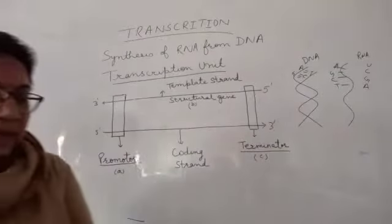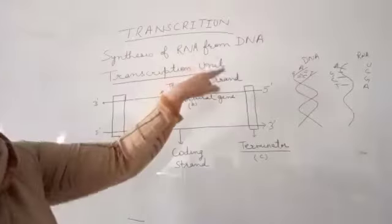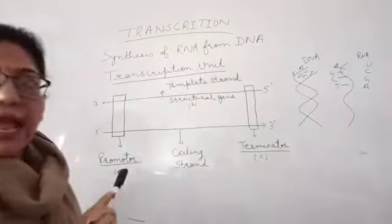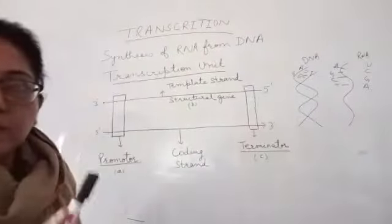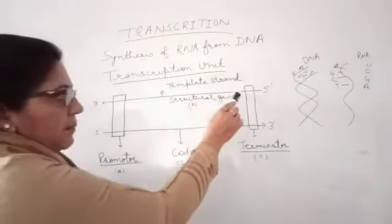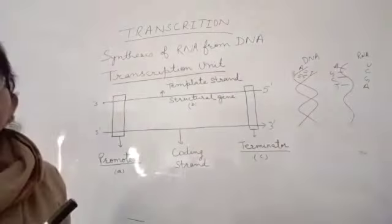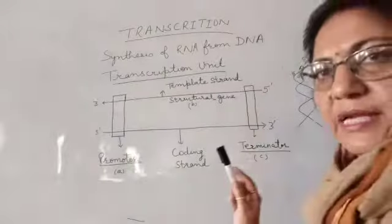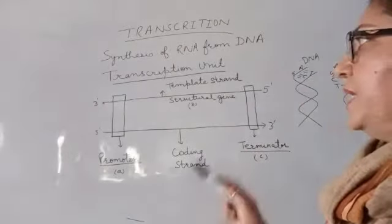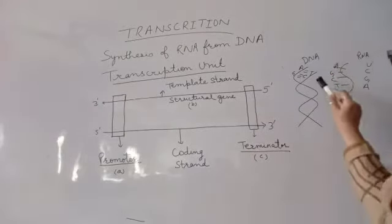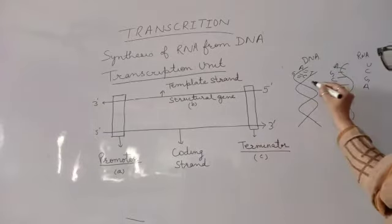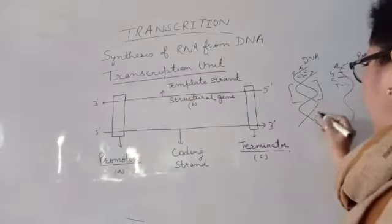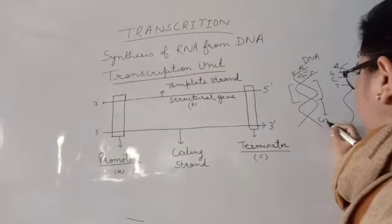So synthesis of RNA from DNA is known as transcription. As we know DNA is double stranded and RNA is single stranded, so from the double stranded DNA only one strand will participate in the transcription. Suppose this is your DNA — one segment of DNA. This segment of DNA will help in the synthesis of RNA, and this segment is known as a cisteron.